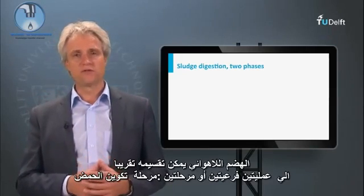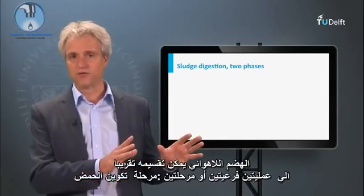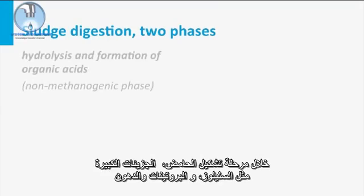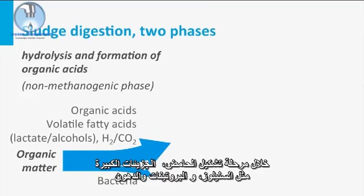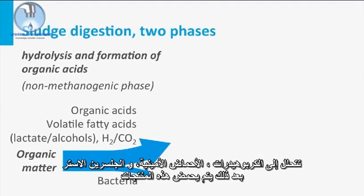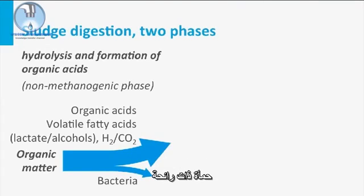Anaerobic digestion can be roughly divided into two sub-processes: an acid-forming phase and a methane production phase. During the acid-forming phase, large molecules such as cellulose, proteins, and fats are hydrolyzed to carbohydrates, amino acids, and glycerol esters, which are subsequently acidified to volatile fatty acids, alcohols, lactate, hydrogen, and carbon dioxide. This acidification reaction is very fast and lowers the pH of the medium, resulting in odorous sludge.